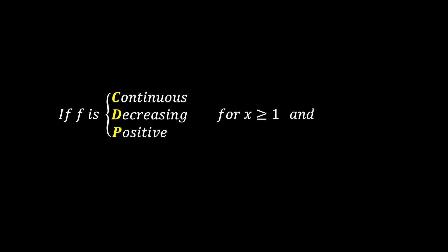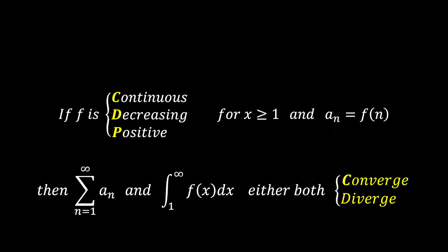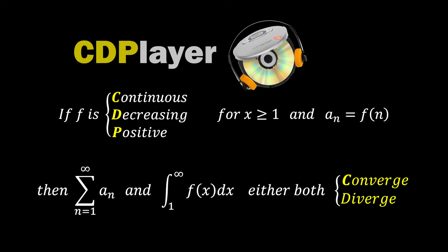Let's summarize the content so far. If f is continuous, decreasing, and positive for x greater than or equal to 1, and a sub n is f of n, then the sum of a sub n from 1 to infinity and the integral of f of x from 1 to infinity either both converge or both diverge. When using the integral test, there are two important points to be aware of. The first is that f must be continuous, decreasing, and positive. As a mnemonic, I personally memorize it as CDP, inspired by the letters in the CD player. If these conditions are not met, be cautious as the integral test cannot be applied.